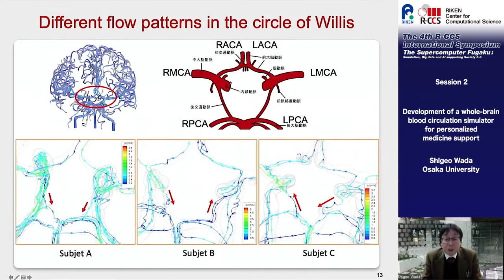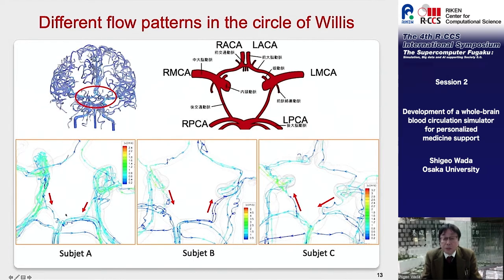This is a result observing the flow patterns in the circle of Willis, which distributes blood flow into the anterior, middle, and posterior arteries. It can be seen that the direction of flow through the circle of Willis is different depending on the subject. It is quite possible that such individual differences cause differences in the degree of recovery from cerebrovascular disorders such as cerebral infarction.